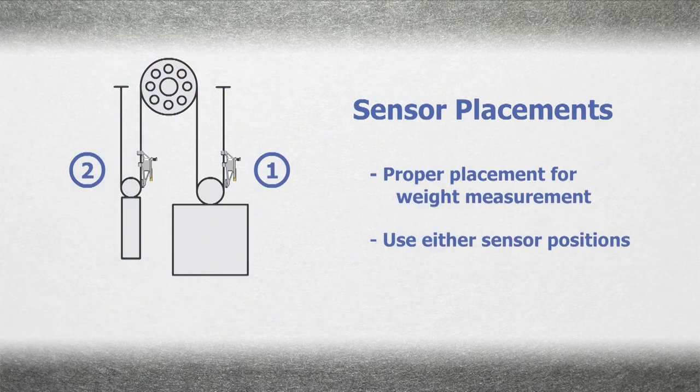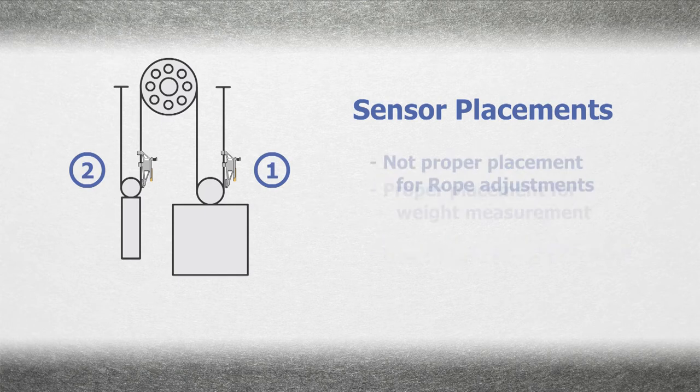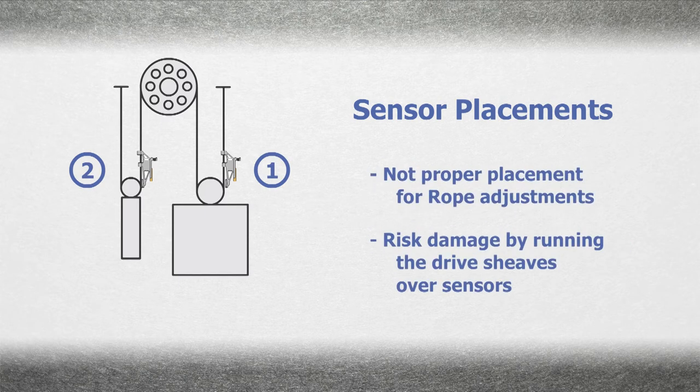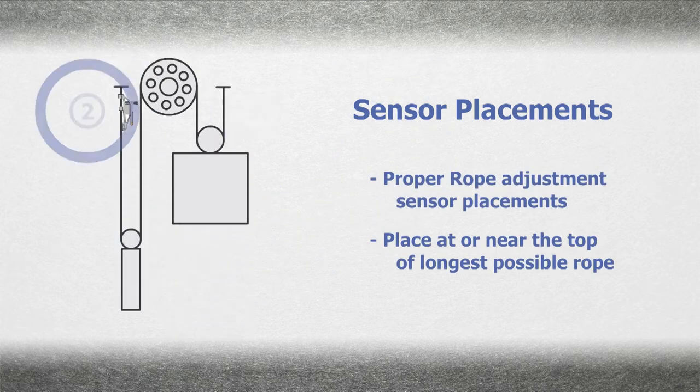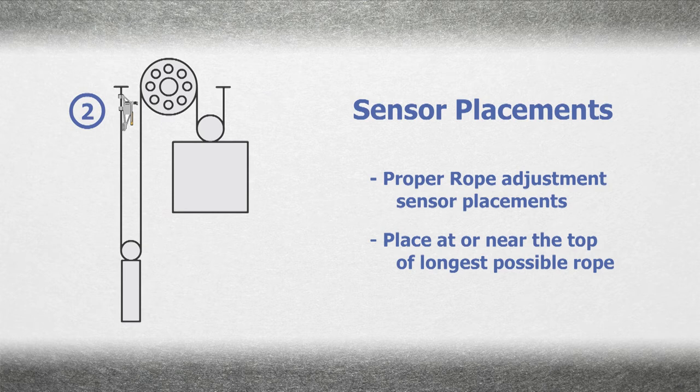This placement of the sensor is suitable for the measurement of the weight of the car or the counterweight. However, this placement would not be appropriate for equalization as there is a risk of damaging the sensors by running the car shivs over the sensors. Sensor placement for equalization should be at or near the top with the longest possible length of rope below the sensor.